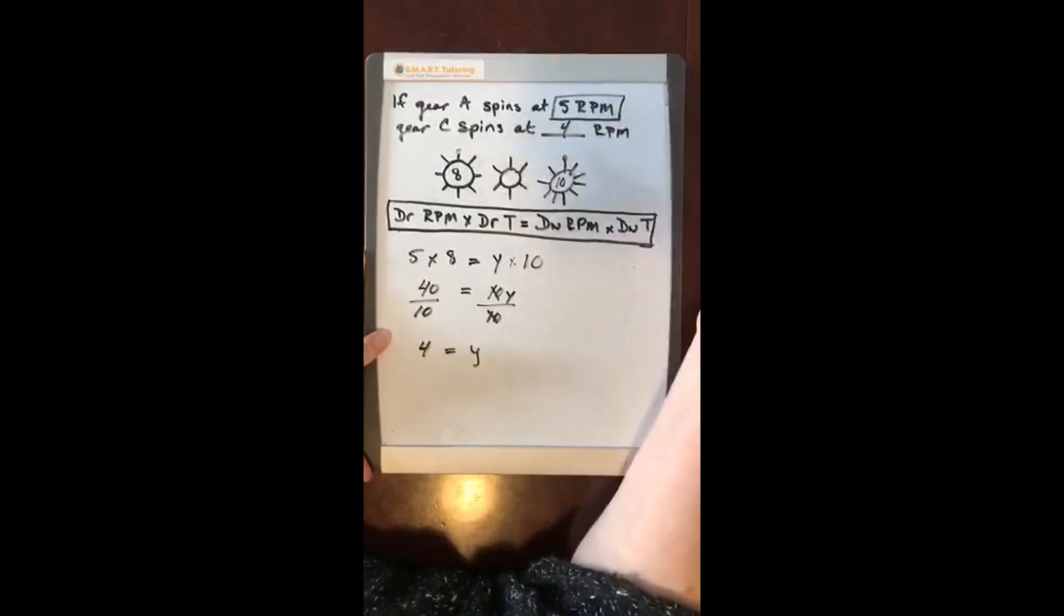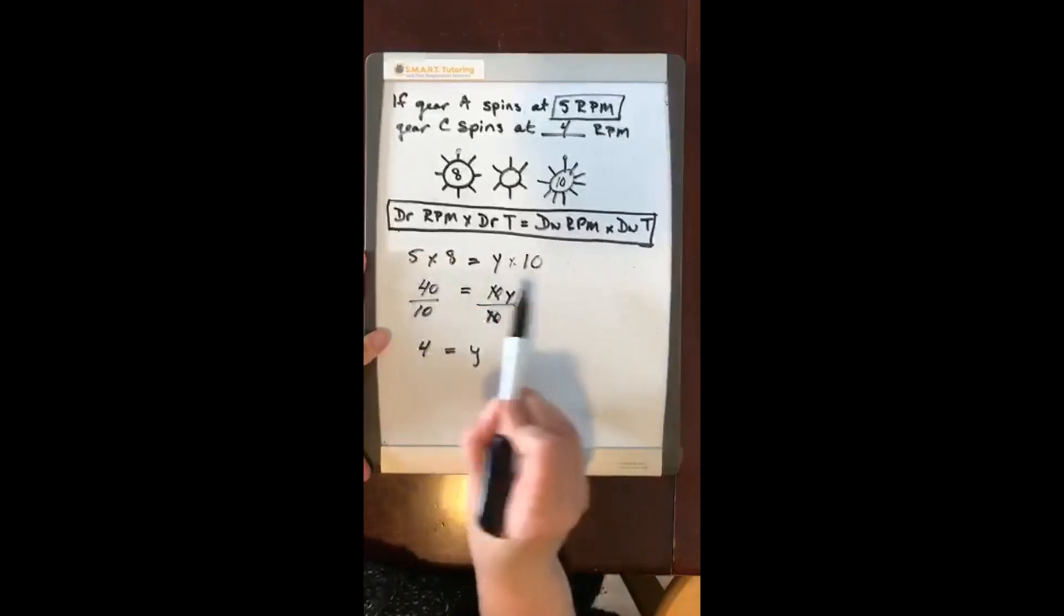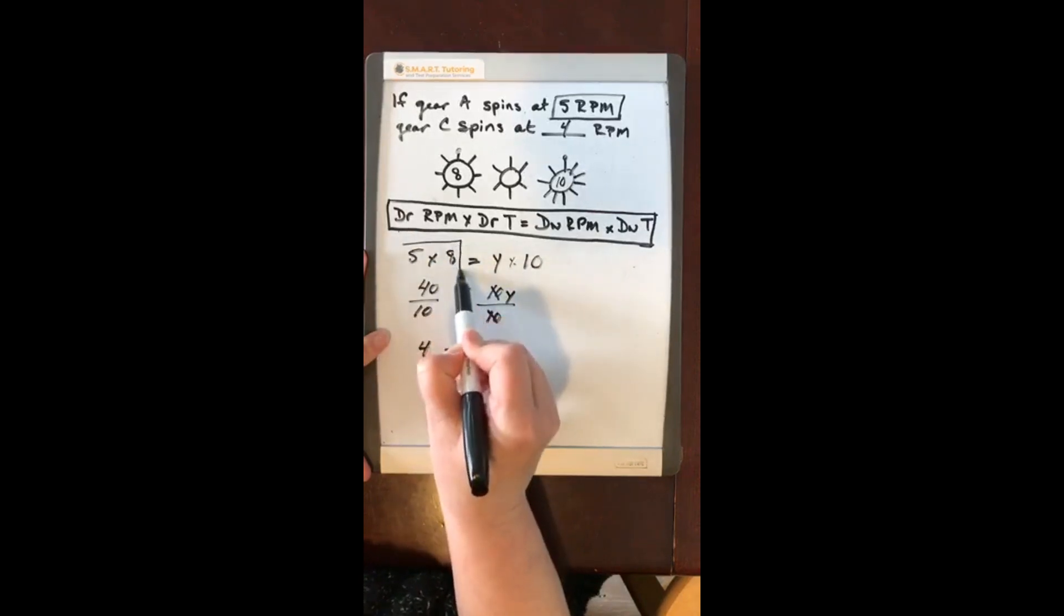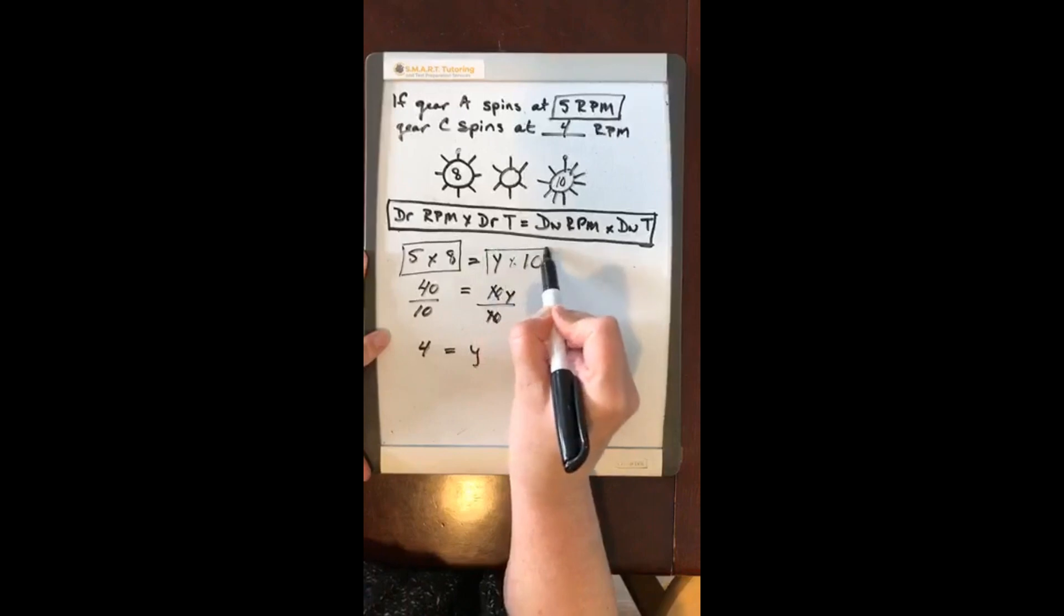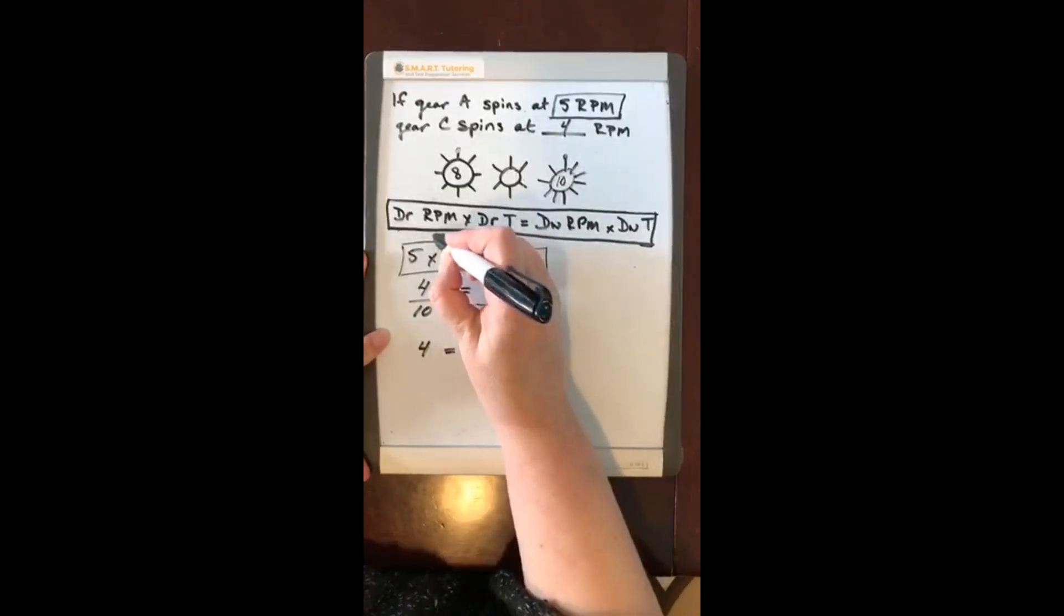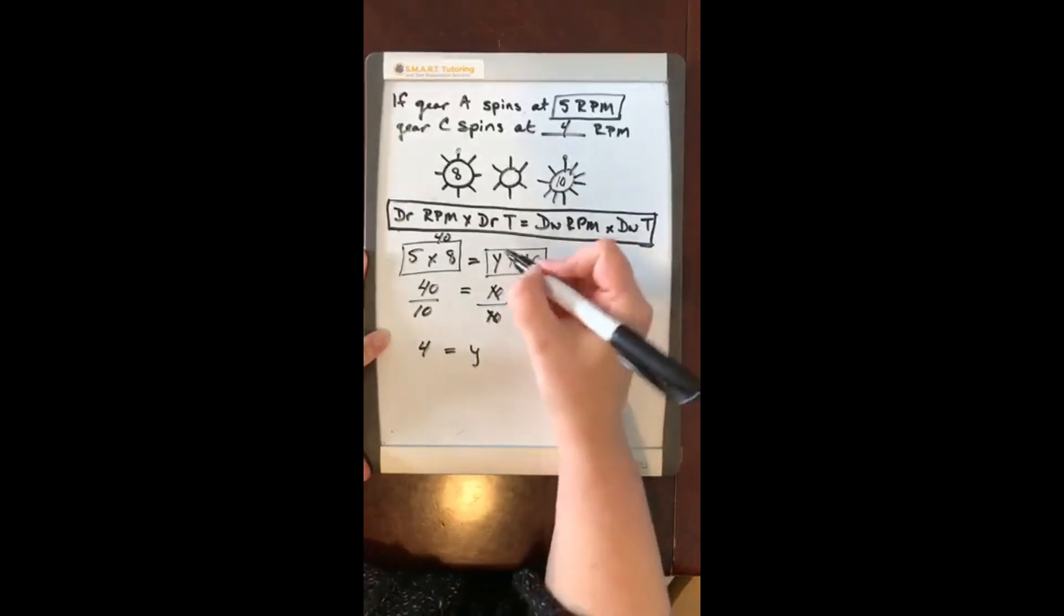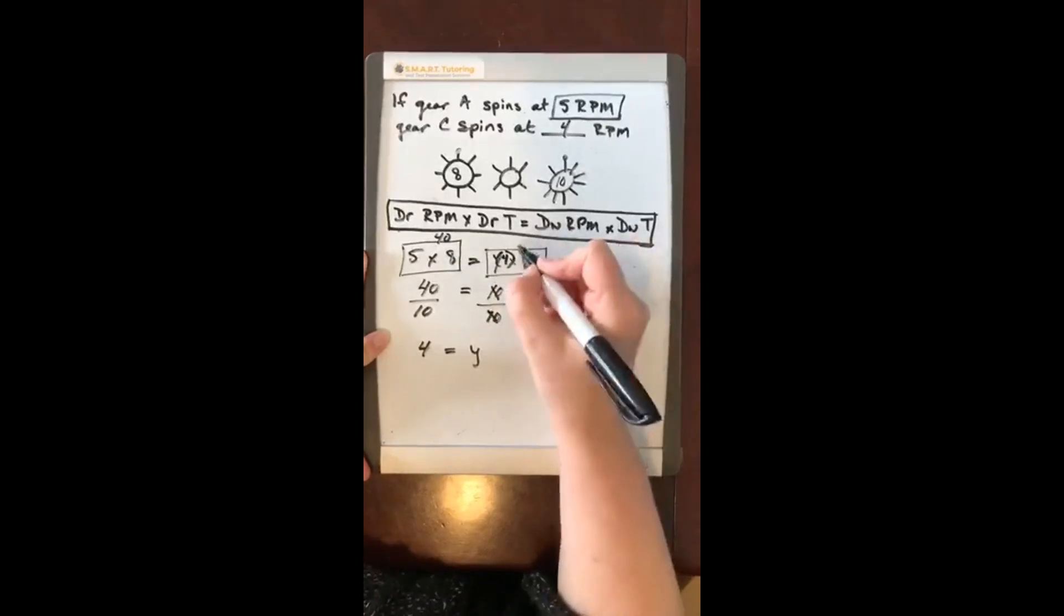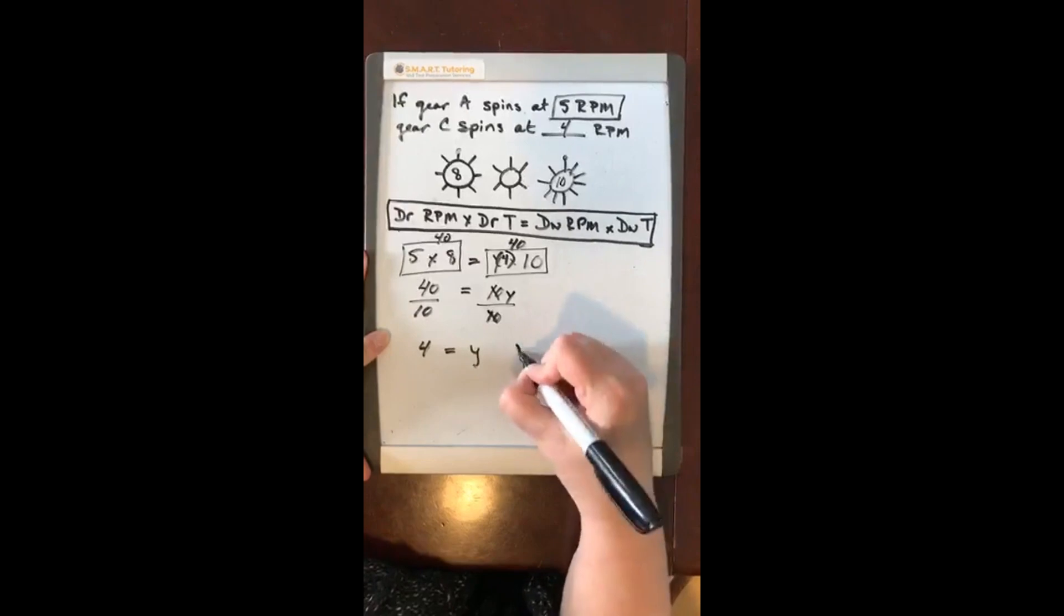Now in order to test this to make sure that you're right, because you're working with an equation, this side when multiplied has to equal this side when multiplied. So 5 times 8 is 40, and if we plug in the 4 here for the y, 4 times 10 is 40. These are equivalent, therefore we know that this is correct.